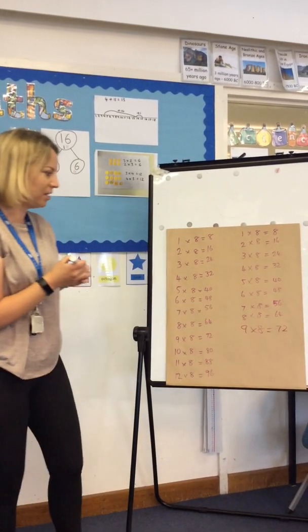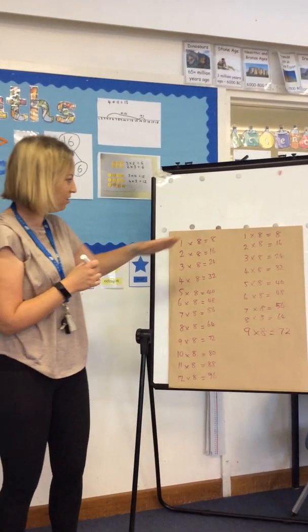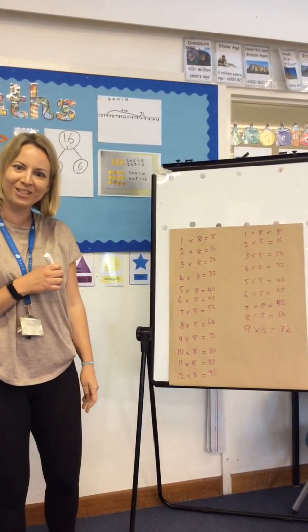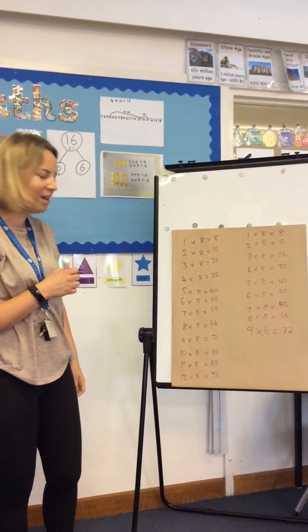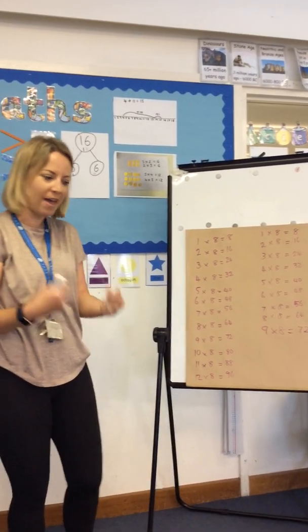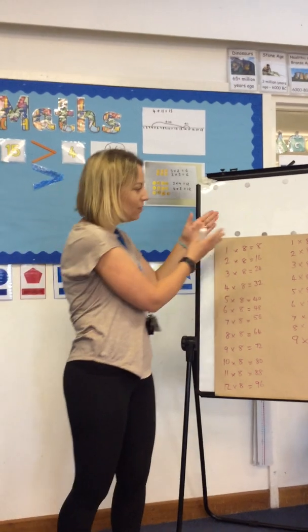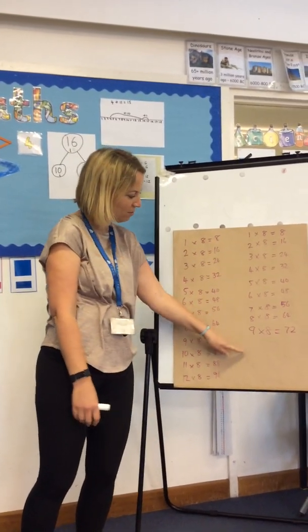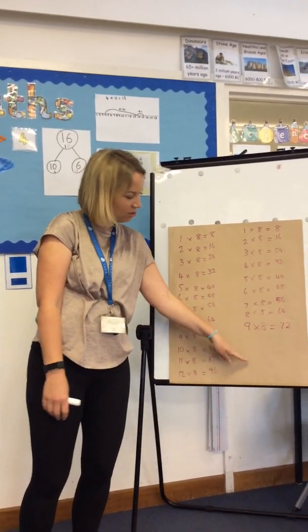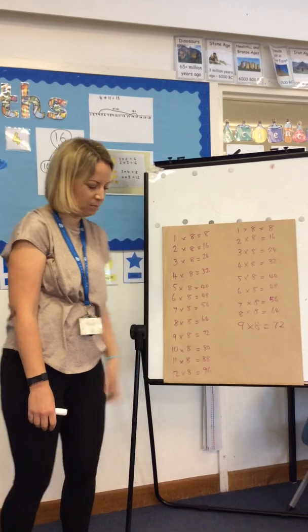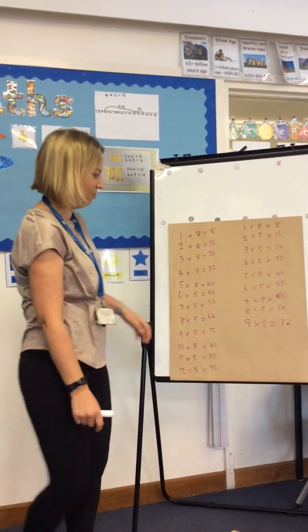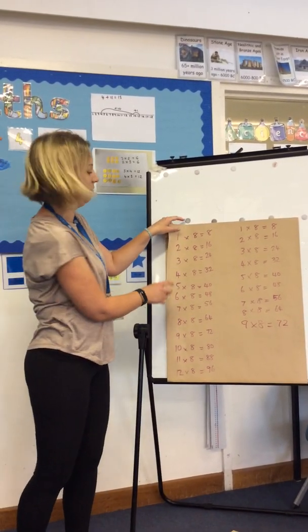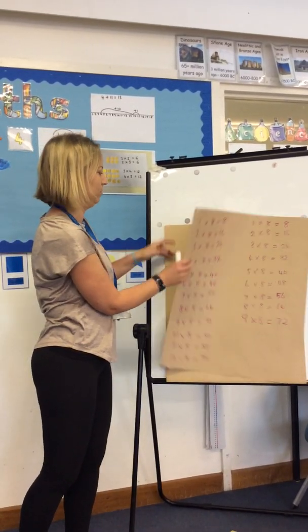I got to nine times eight is seventy-two. Look how many times I managed to write my eights out in two minutes! You could try that again and see if you can beat how many times. I reckon I can at least get to twelve times eight the second time round. Well done for having a go — keep practising with different times tables.